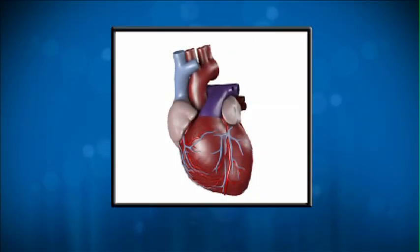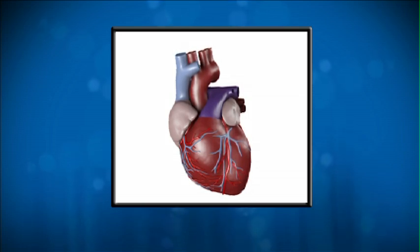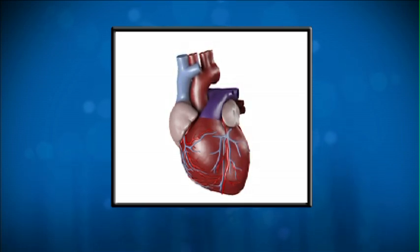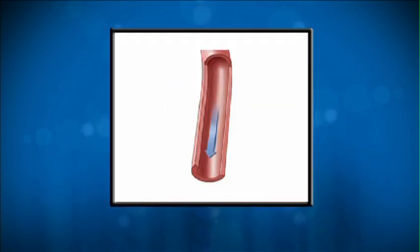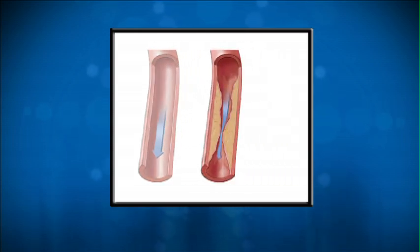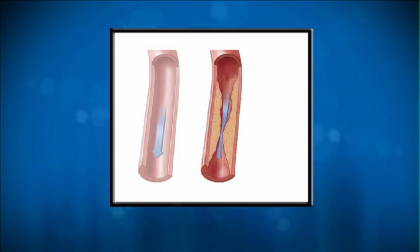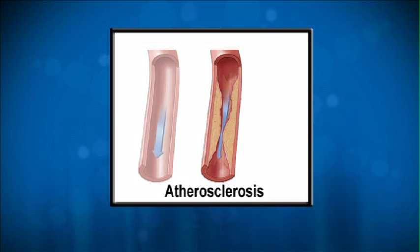Your heart is a muscular pump that requires heart arteries to supply oxygen-rich blood to keep it going. Coronary heart disease occurs when these blood vessels become narrowed due to a buildup of plaque. The plaque is made up of cholesterol and other substances. This process is called atherosclerosis.